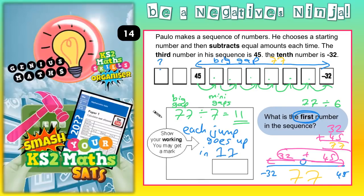We're going up in 11s, which will let us work out all the boxes between 45 and negative 32. But since we're going from 45 down to negative 32, we must be going down in 11s — subtracting 11 each time. So 45 take away 11: take 10 off gives 35, then another 1 gives 34. Take 10 off gives 24, then another 1 gives 23. Take 10 off gives 13, then another 1 gives 12.